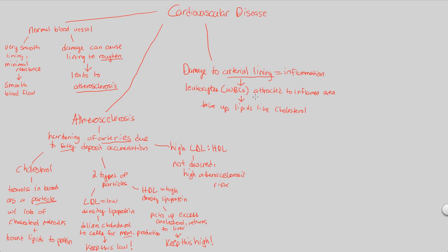Oftentimes, if you have a large amount of arterial lining inflammation, that means you have a large amount of white blood cell accumulation at that area. When you have that combined with a high LDL to HDL ratio, you're putting yourself at a very bad disadvantage. What occurs is you may begin to produce what is known as a plaque within the arterial lining. This plaque structure begins to grow, occurring when you have lots of white blood cells and lots of cholesterol coming to an area. As a plaque grows, it essentially becomes a fatty deposit.